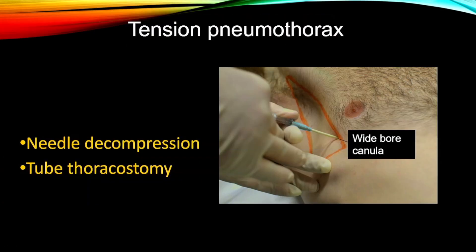Once you detect tension pneumothorax, either talk to the surgeons immediately or — because we are doctors ourselves — be capable of handling the emergency procedure, which is needle decompression with a wide-bore cannula at an upper intercostal space. At least we should be able to do it. This is not the definitive treatment; it is a time-buying treatment before a proper ICD is placed. A needle thoracostomy followed by chest tube decompression is the treatment for a tension pneumothorax.